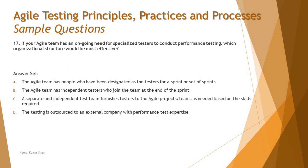Option C says a separate and independent test team furnishes testers to the agile project team as needed, based on the skills required. This looks more relevant than B, because having independent testers embedded within the agile team would engage them from day one when they may have no contribution to make. Performance testing is specialized and is typically required closer to the release when we have a stabilized system — so testers should be brought in only when needed.